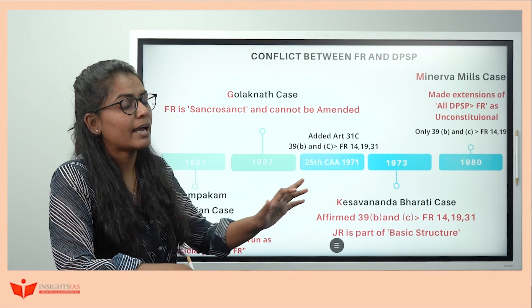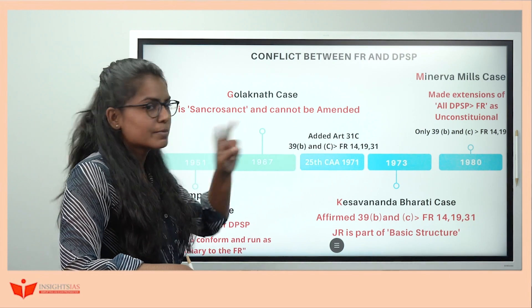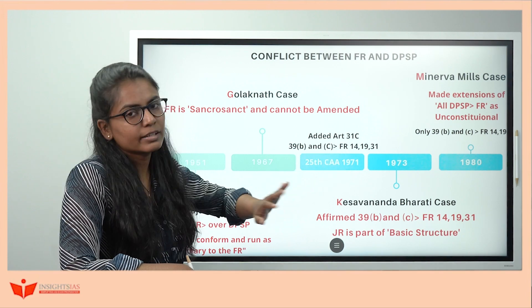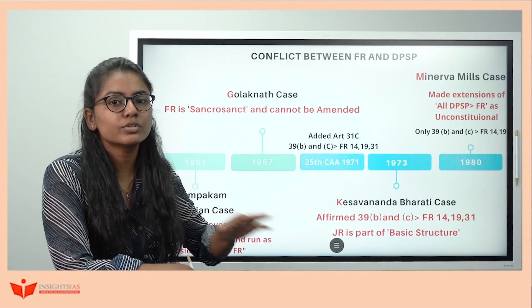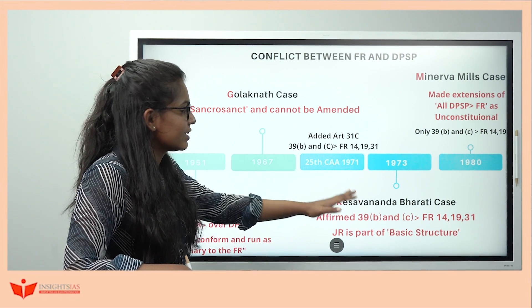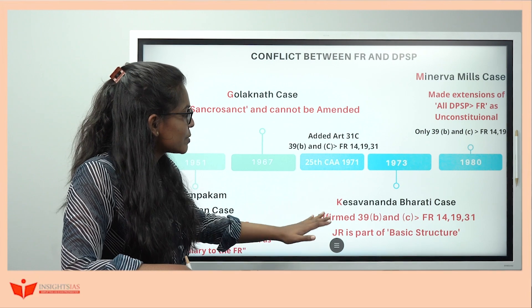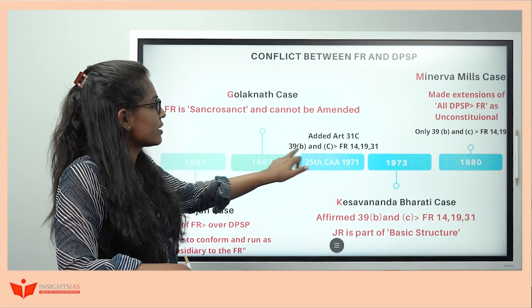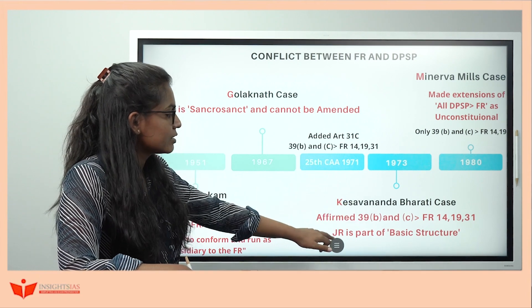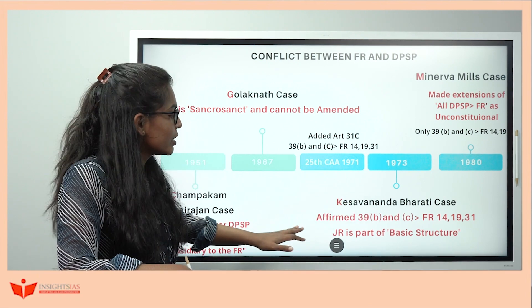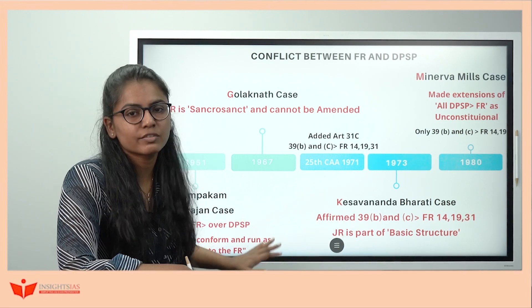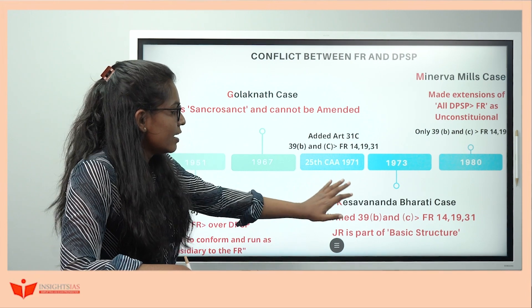To counter Golaknath, the government came up with the 25th Constitutional Amendment Act in 1971, adding Article 31C. It had two provisions: one gave primacy to Articles 39B and 39C over Articles 14 and 19; the other said no judicial review on this part. To counter the 'no judicial review' provision, the Keshavananda Bharati case in 1973 held that while primacy of 39B and 39C is fine, no judicial review is wrong as judicial review is part of the Basic Structure of the Constitution.